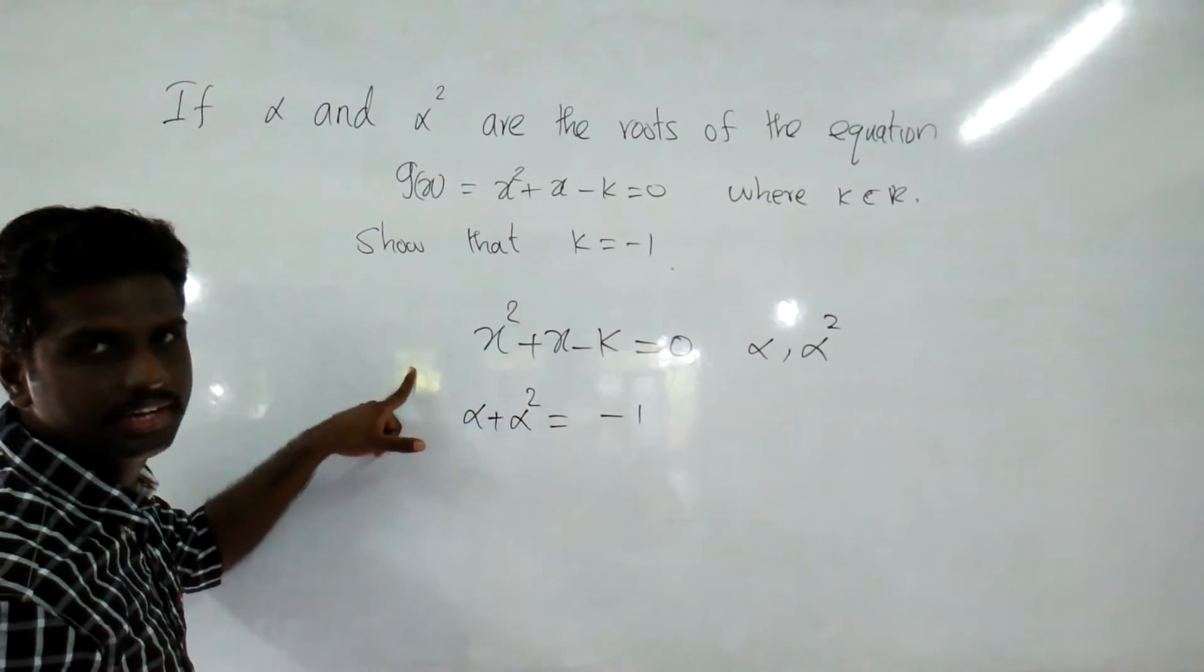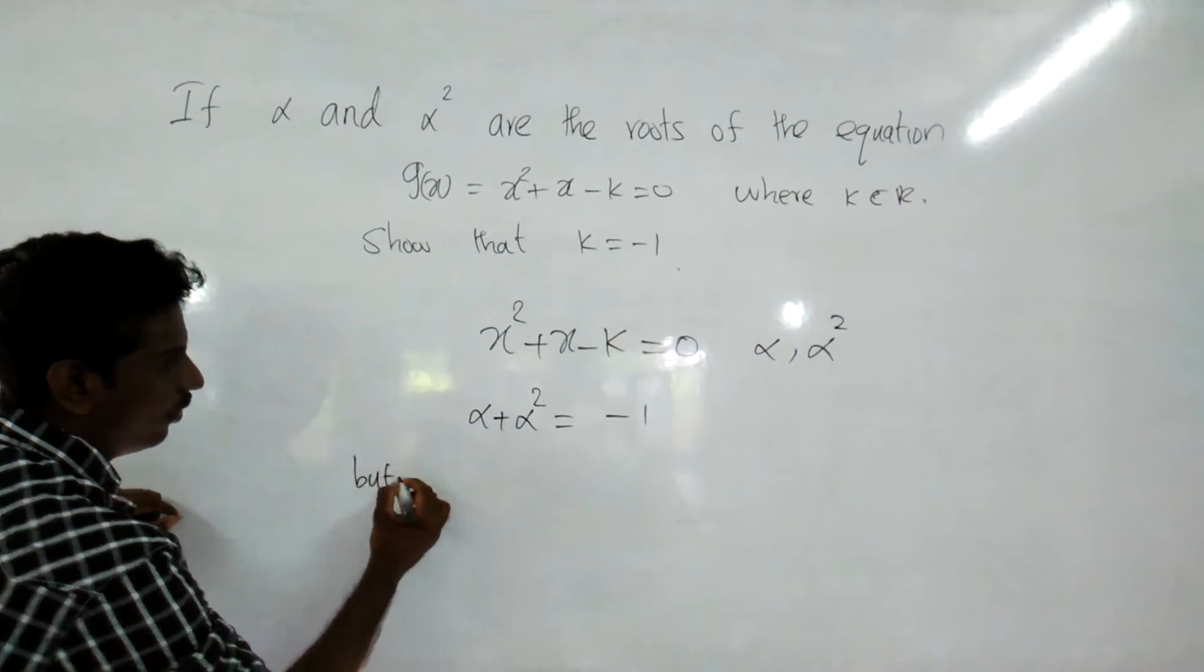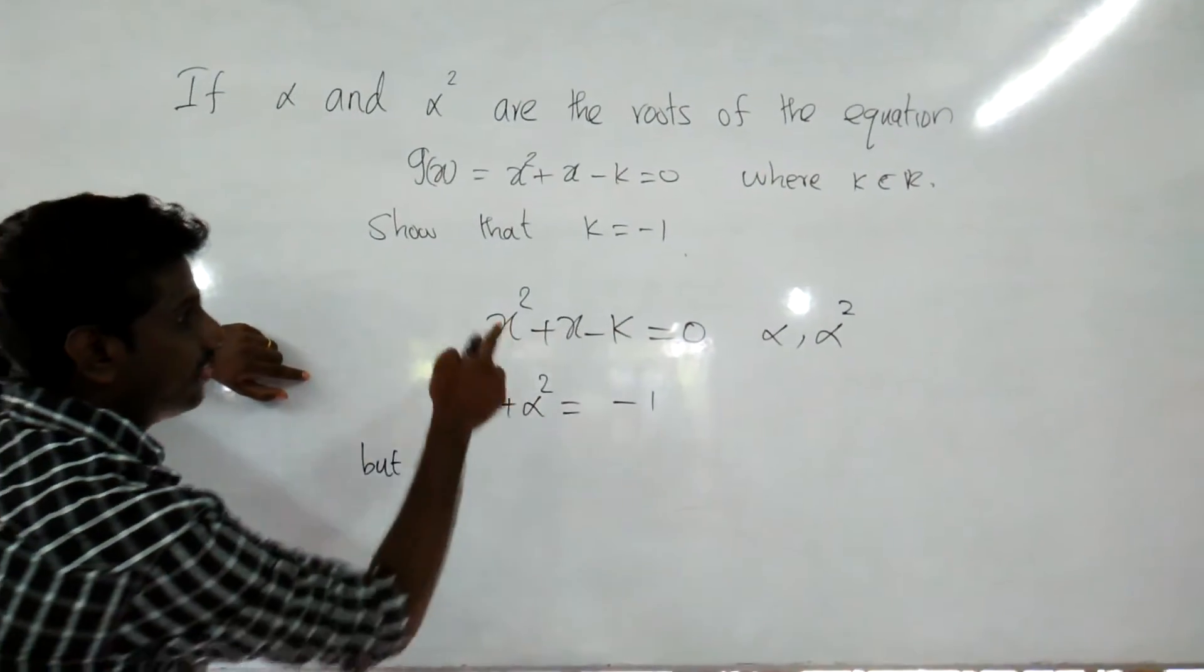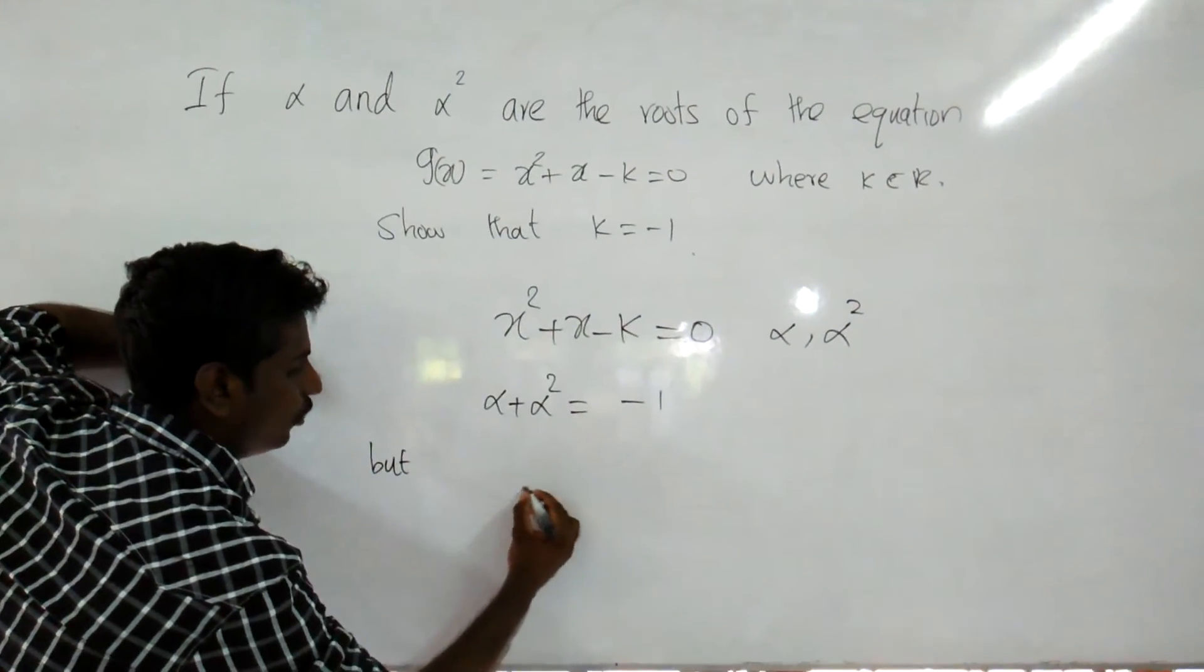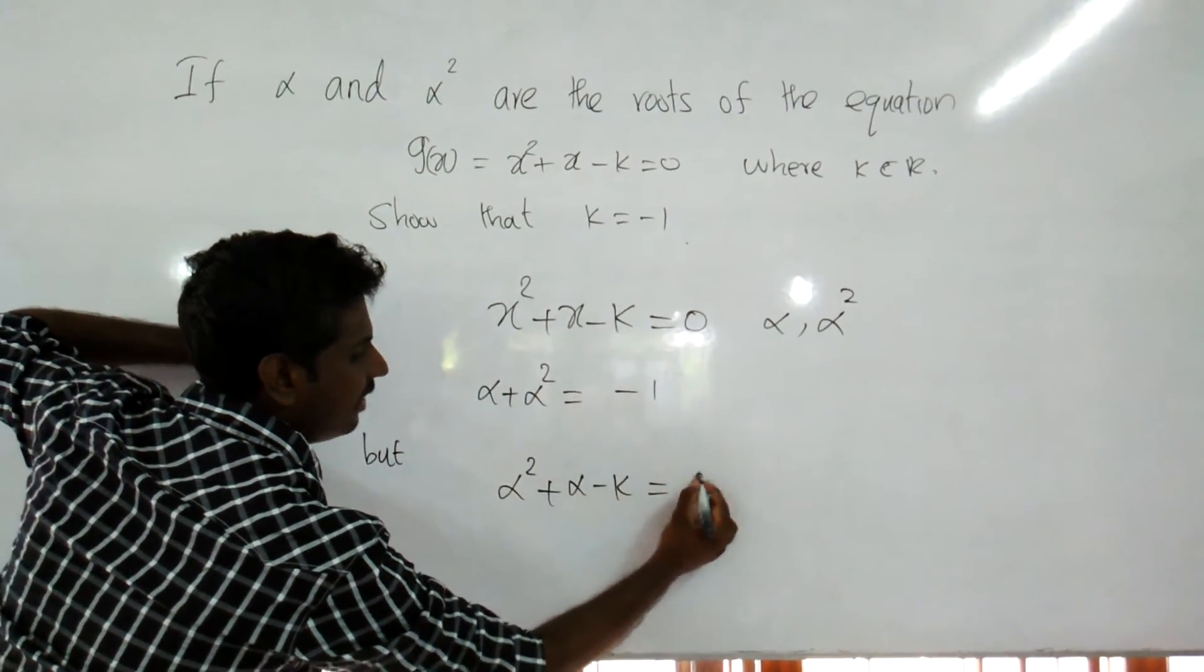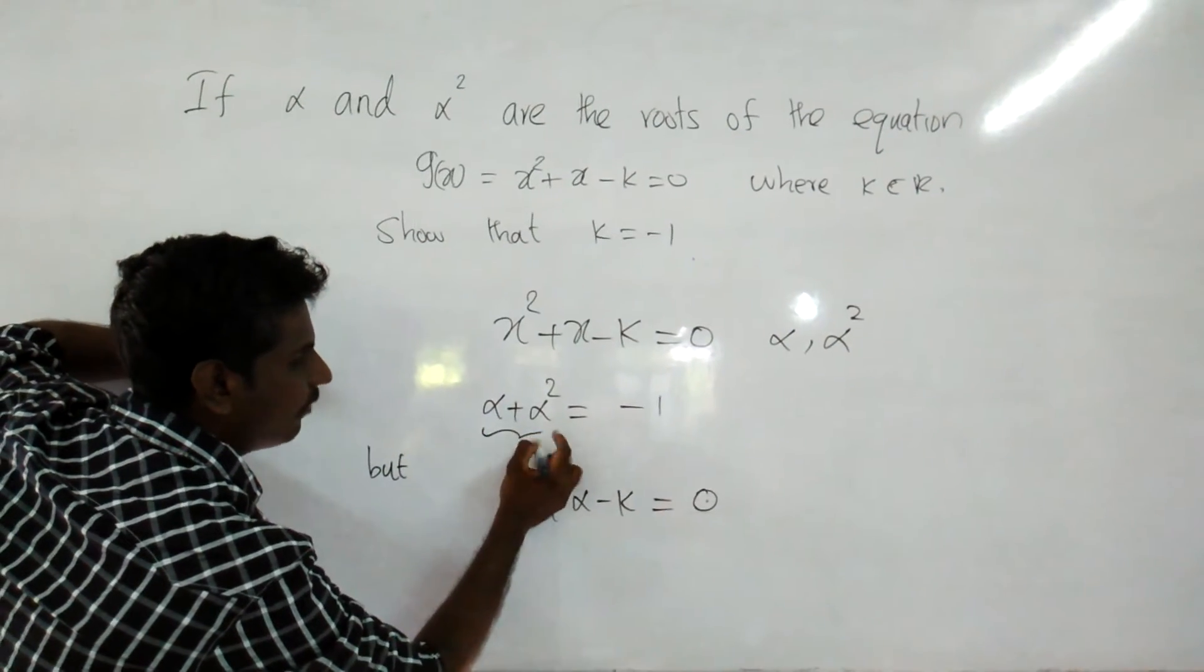But you know alpha is the root of this equation, then you can substitute alpha here. So from that, alpha square plus alpha minus K is equal to 0. So you know alpha plus alpha square is equal to minus 1.